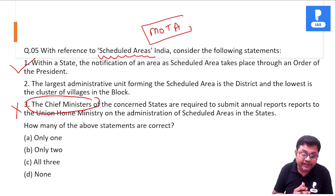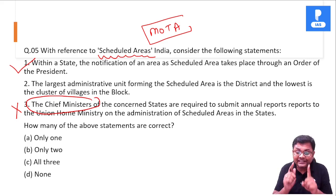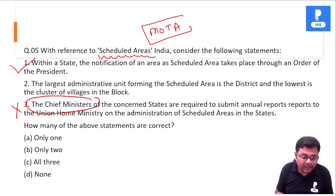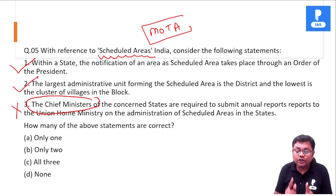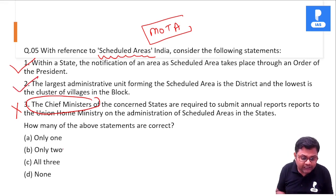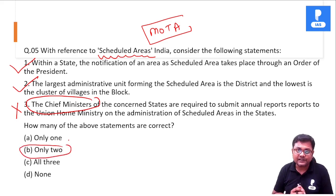So what is the correct answer? Statement one is correct, statement two is correct — so only two statements are correct. B for Bombay is the right answer.